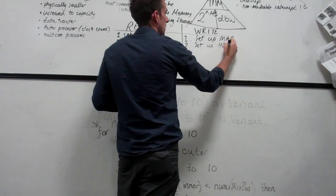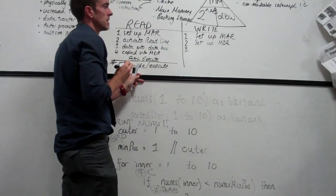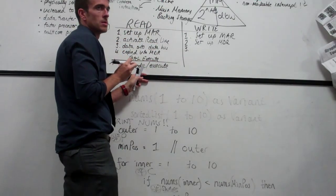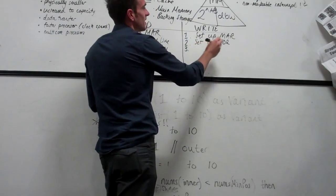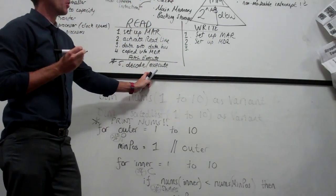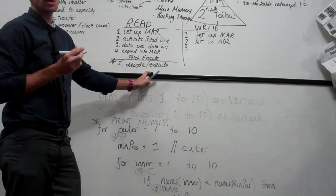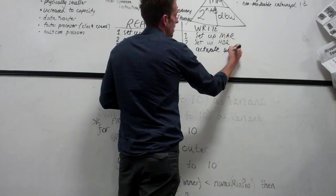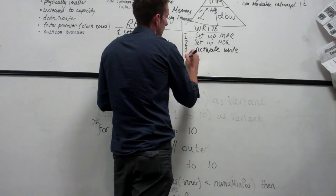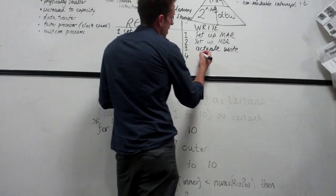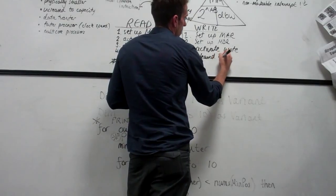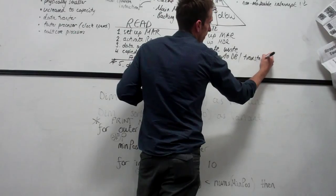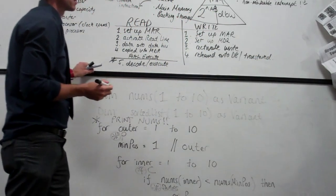For a write — that's taking something out of the processor to put it in main memory. Step one: set up the MAR. Step two: set up the MDR with the data you want to write. Step three: activate the write line. Step four: data is released onto the data bus and transferred to main memory — make sure you mention both the data bus and the address bus.